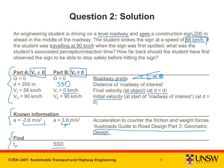This is the acceleration to counter the friction and weight forces, and is general to cars. However, you may notice that the values are of a different sign. Don't forget that we are using two different equations in part A and part B. In part A, we are going to use the general equation; in part B, we are going to use the SSD equation.